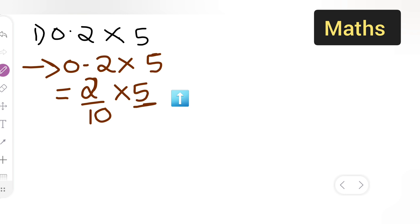Now, your denominator is not given, so you can consider it as 1. That way, you can write down 2 multiplied by 5 and 10 multiplied by 1.